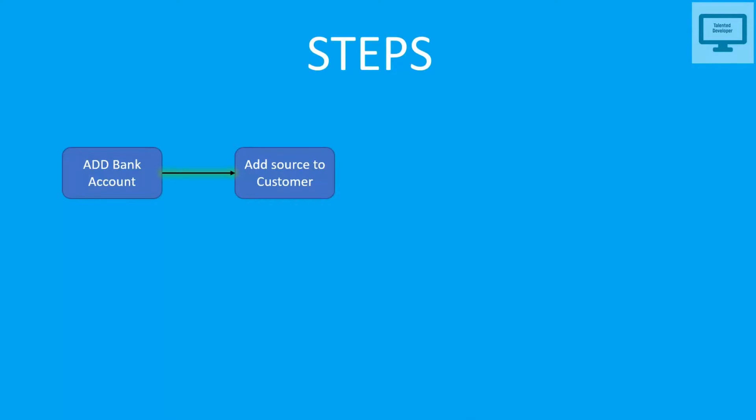In detail, we need to use the token ID. Once we are done with that, we need to verify the account. There are some steps to follow to verify the account, and once we are done, we can go for the payment. So we need to follow these four steps. In the next video, I am going to explain all the details step by step in the coding section.